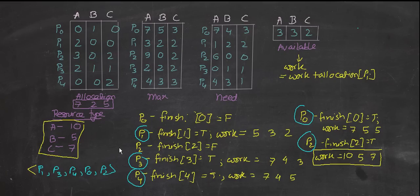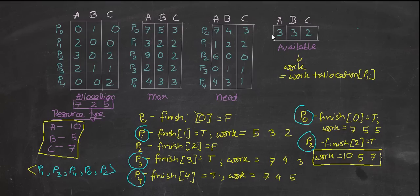The Banker's Algorithm states that after each process finishes, you update the available matrix, because a finished process releases its resources which can then be used for other processes. The available matrix is set equal to the work matrix. I suggest having some prior knowledge of the concept before watching this simulation.